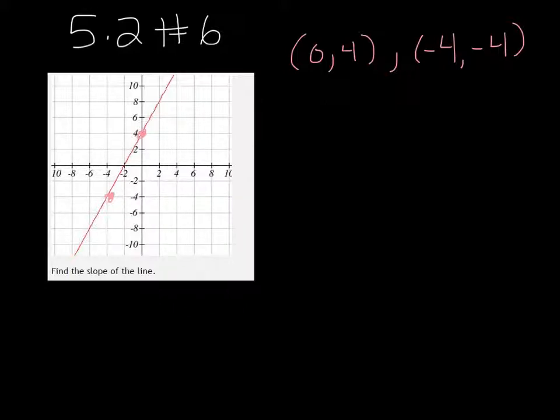If I were to draw a triangle connecting those two points and I counted the boxes going up or down, it would be 1, 2, 3, 4. So the rise would be 4 and the run is 2, so the slope of this line is 2.